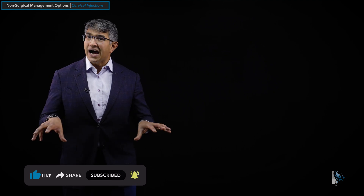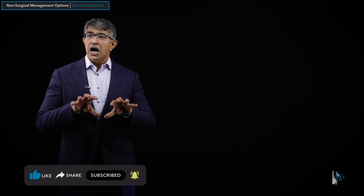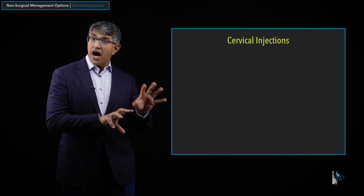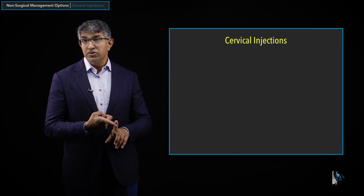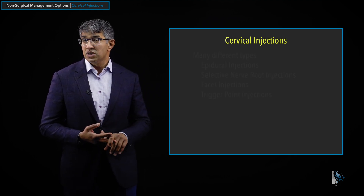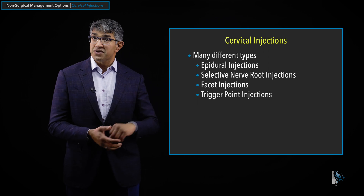A second very important non-surgical treatment modality that we use for cervical spondylosis is cervical injections. I'd like to take a few minutes to explain what cervical injections are and what they're trying to achieve. Cervical injections come in a few different types. As a neurosurgeon in the United States, I don't generally do injections. Nevertheless, I can explain how we use injections both therapeutically and diagnostically.